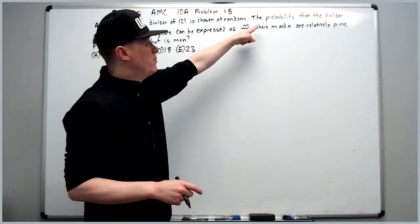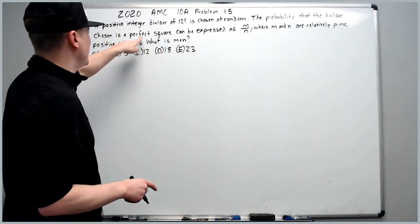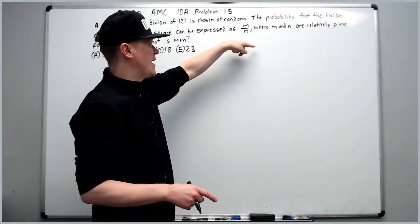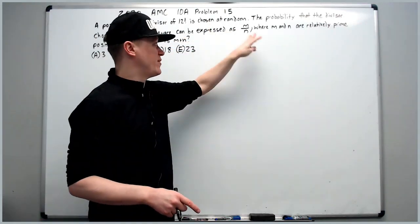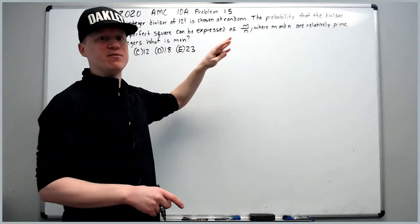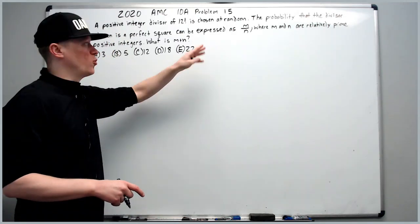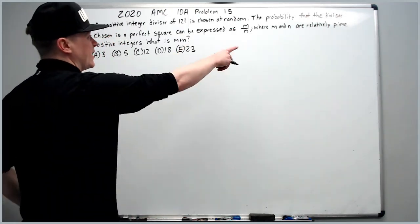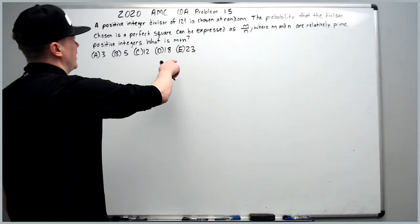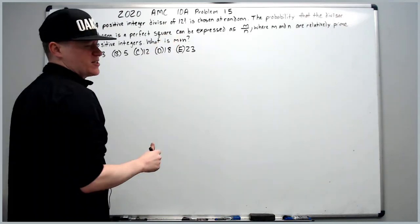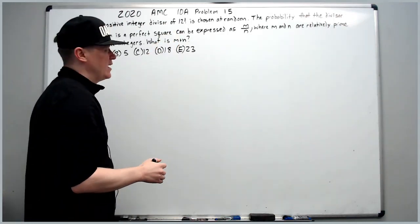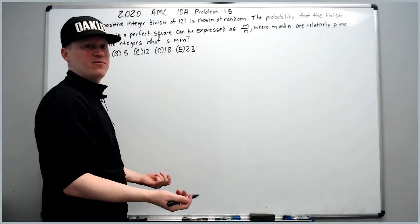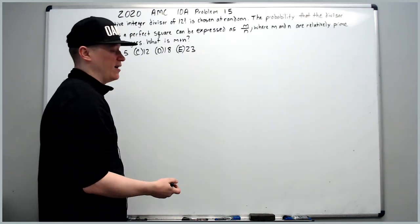The probability that the divisor chosen is a perfect square can be expressed as a fraction m over n. Find m plus n where m and n are relatively prime. First, we need the prime factorization of 12 factorial.